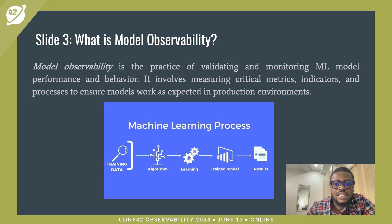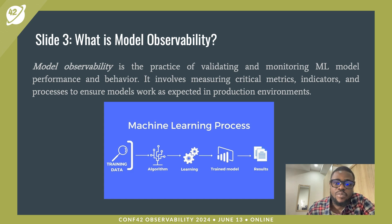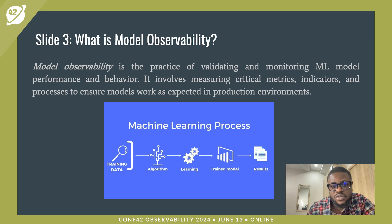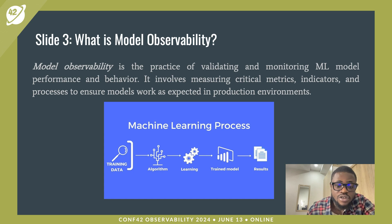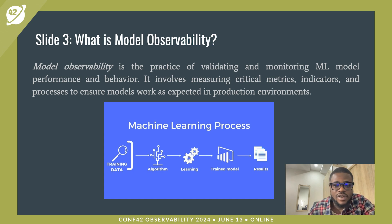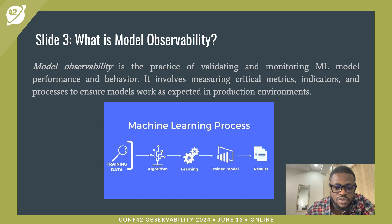Let's start by talking about what model observability is. Model observability is the practice of validating and monitoring ML model performance and behavior. It involves measuring critical metrics, indicators and processes to ensure the model works as expected in the production environment. Simply put, model observability is the process of validating, evaluating, measuring, monitoring and ensuring our model performs the way we expect it to in production.